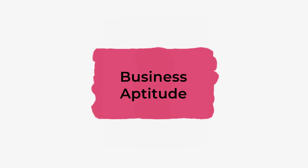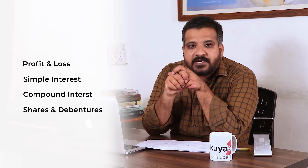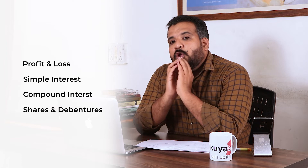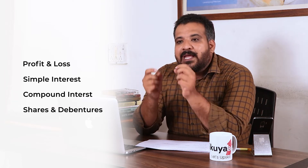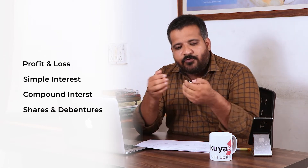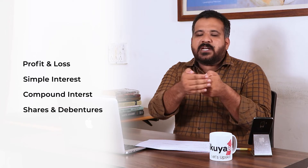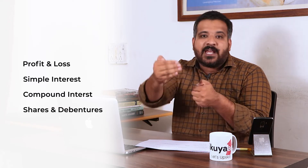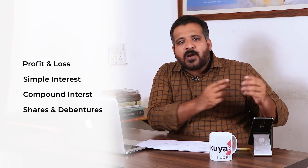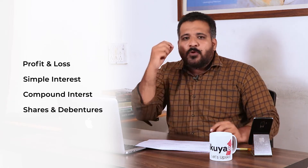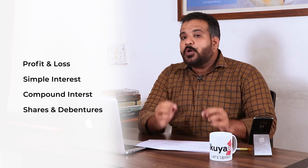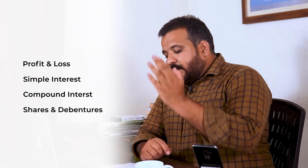The second section is Business Aptitude, which covers profit and loss, simple interest, compound interest, and shares and debentures. In any aptitude test, profit and loss and simple and compound interest carry a huge weightage. Compound interest is completely based on percentage — if you take a quantity and increase it by 10% repeatedly, it compounds. If you are good at the compounding concept from percentage, you can easily solve compound interest and simple interest.